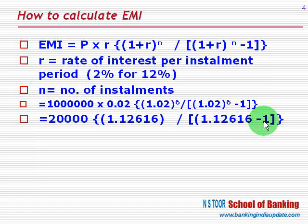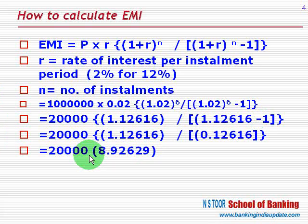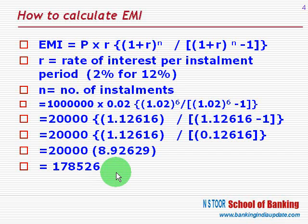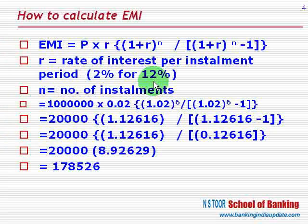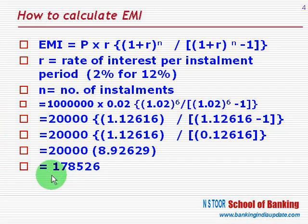Simplifying further, we have the value 1.126. And finally, here we have the amount of installment. So to repay this loan of rupees 10 lakh at 12% interest in 6 monthly installments, every installment has to be of an amount of Rs 1,78,526.